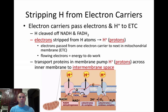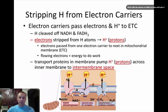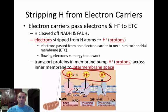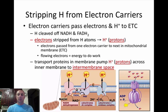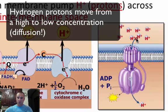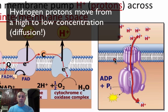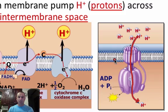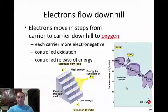These transport proteins actually create a hydrogen gradient. If all these hydrogens come outside into the intermembrane space, there are going to be more hydrogens outside than inside, and that's going to create a gradient. What happens is, when you create that gradient, the hydrogens want to come back through this pump. And when they do, they release energy, which actually creates ATPs.